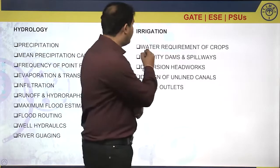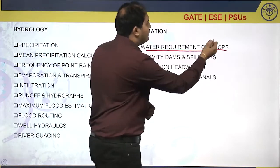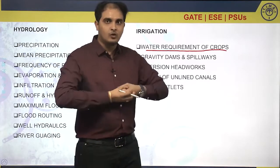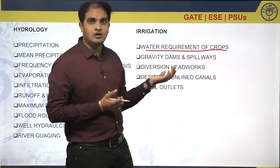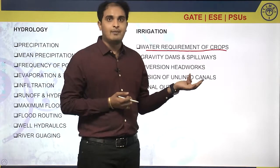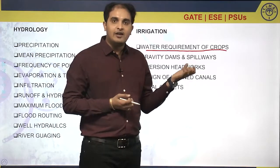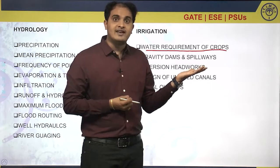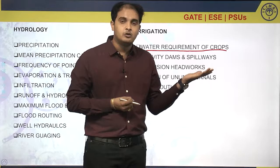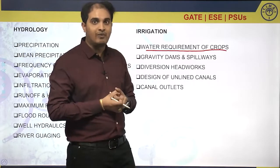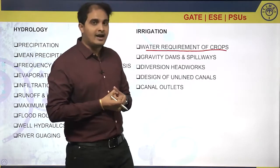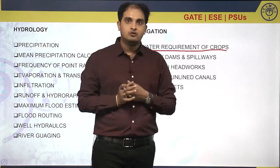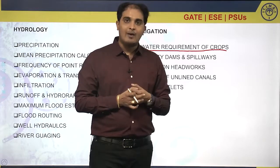The first concept is water requirement of crops — how much water is required by a crop. We can expect questions on what is field capacity, saturation capacity, ultimate wilting point, permanent wilting point, and the depth of water available to the plant root zone. In the soil to which water is supplied, we have two kinds of pores: capillary pores and non-capillary pores.